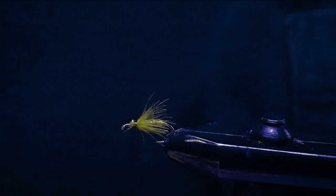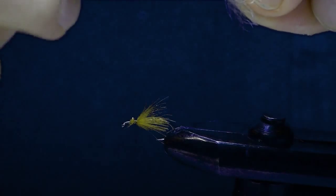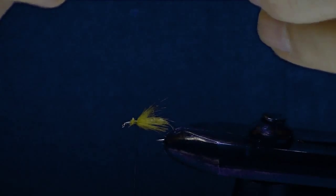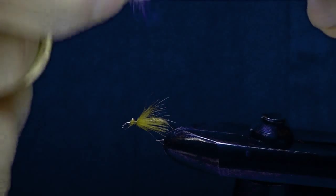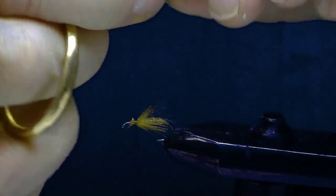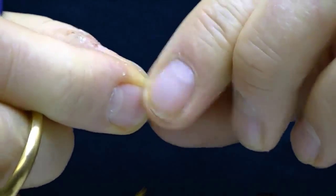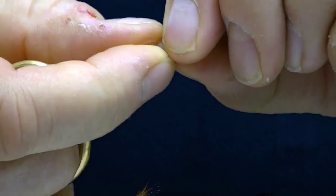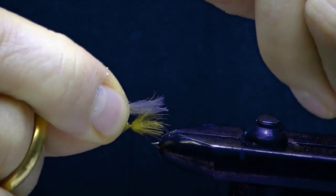Now I'm going to take some CDC puffs. CDC puffs are a much shorter little tiny fluffy feather and I match those up particularly by the tips. And what I want to do, I lick my fingers a little bit and that shows me the little underwing that I'm going to put on this.